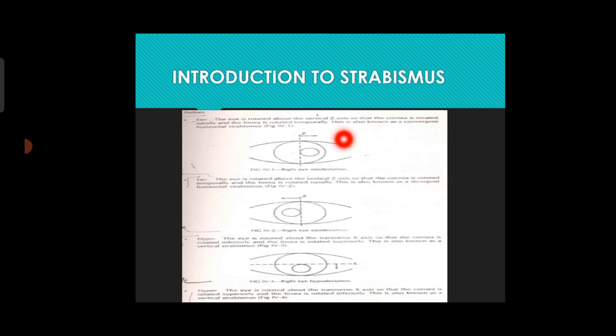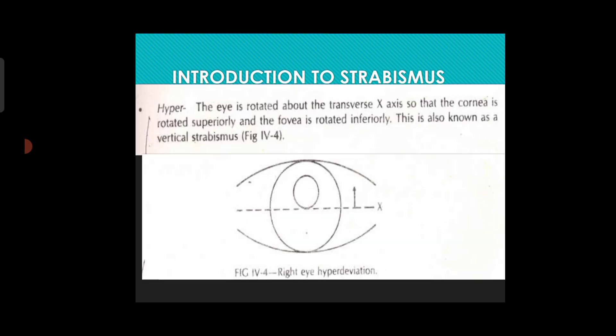In exophoria, you can see the eye is rotated about the vertical axis so the cornea rotates nasally — from the outside it comes towards the nose. For esophoria the opposite occurs: the eye is towards the nose, and on cover-uncover or alternate cover test it moves outward. For exophoria the eye moves inward; for esophoria it moves outward. For hyperphoria the eye goes upward.